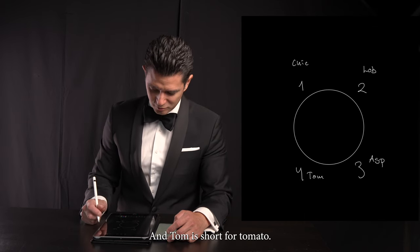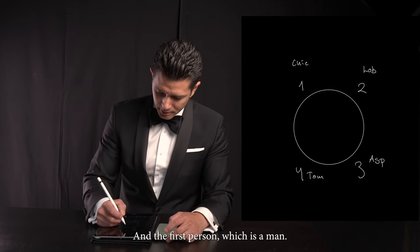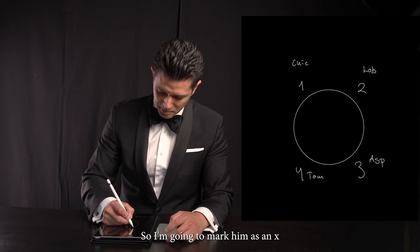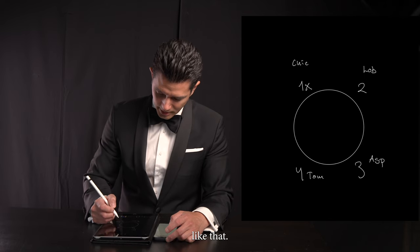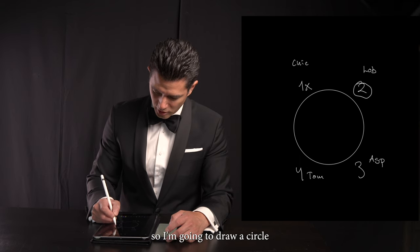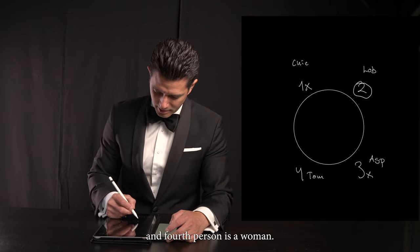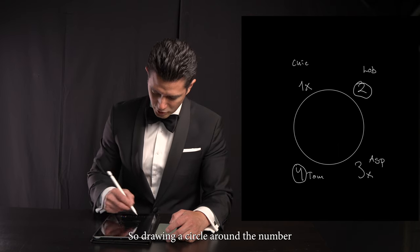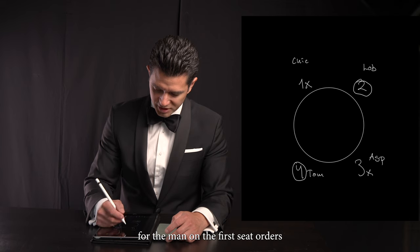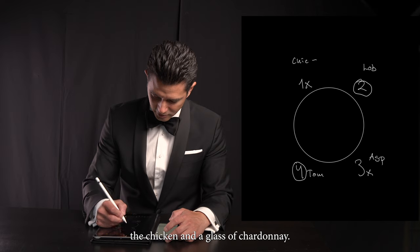The fourth person is a vegan so they order the heirloom tomato salad — 'tom' is short for tomato. They will also order drinks. The first person is a man so I'm going to mark him with an X. The second person is a woman so I'm going to draw a circle around the number two. The third person's a man and the fourth person is a woman, so drawing a circle around the number four.